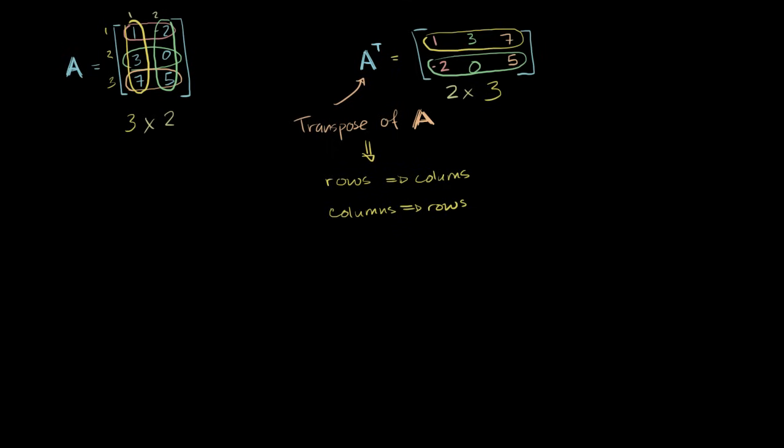Let's do another example of that, just so we really make it clear. So let's say I have matrix B. Once again, bolded capital letter. And let's just say it's a really simple 2 by 2 matrix. So it's negative 1, 5, pi, and 3 are its entries.